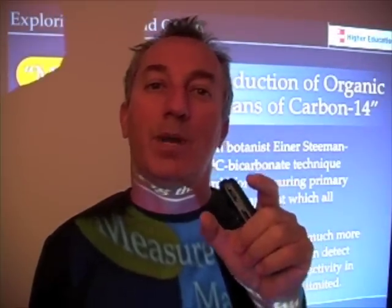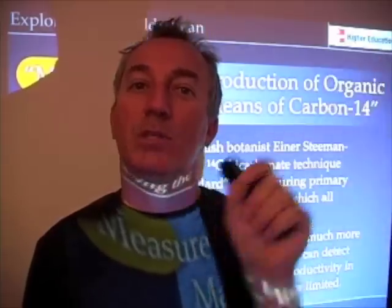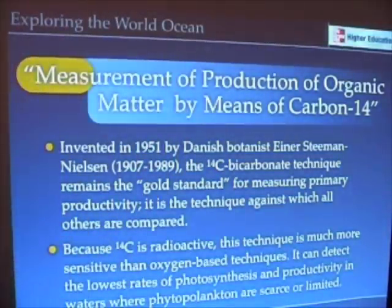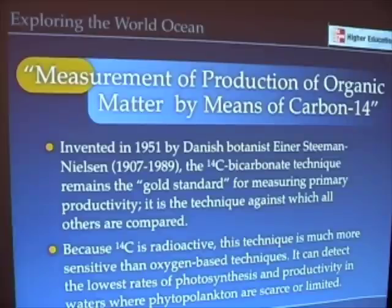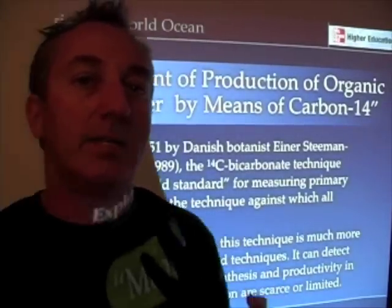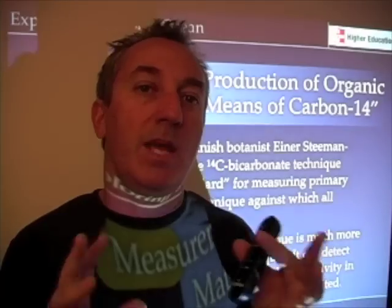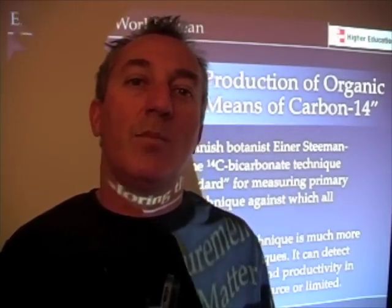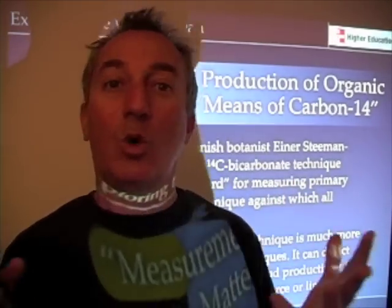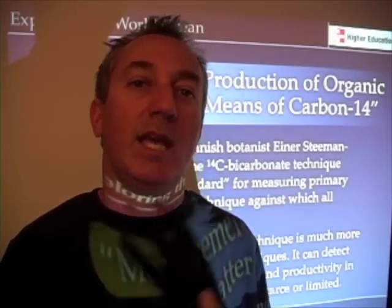Here we're using a radioactive compound — something that spontaneously emits radiation — as a way of tracing primary productivity in the ocean. The advantage of this method is that it's very sensitive; you can have very low concentrations of plants and very low rates of photosynthesis and this method can still be used. Whereas the oxygen method tends not to be as sensitive, the C-14 method remains sort of the gold standard for measuring primary productivity in the ocean.